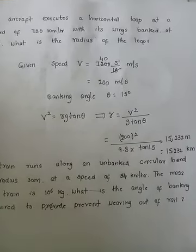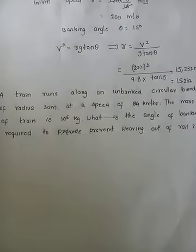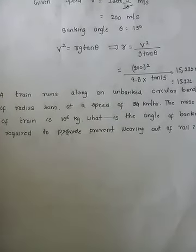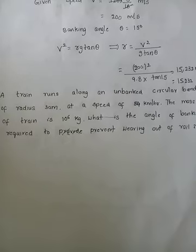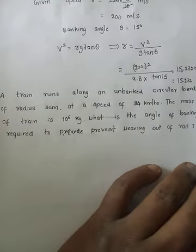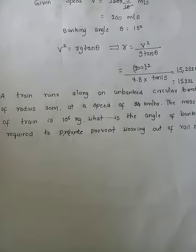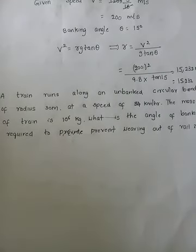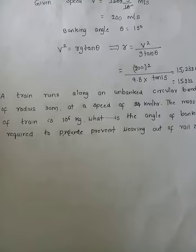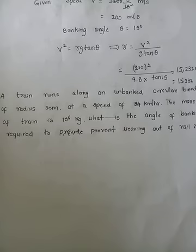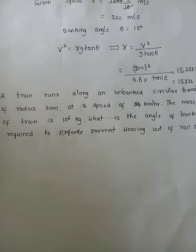The next question is on the same basis. A train runs along an unbanked circular bend of radius 30 meters at a speed of 54 km/h. The mass of the train is 10⁶ kg. What is the angle of banking required to prevent veering off the rails? To prevent veering off the rail it should be banked, so we are directly calculating tan θ.